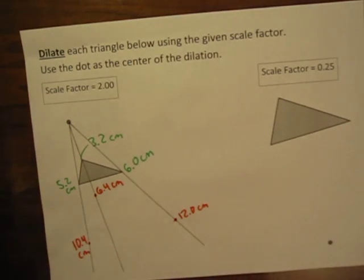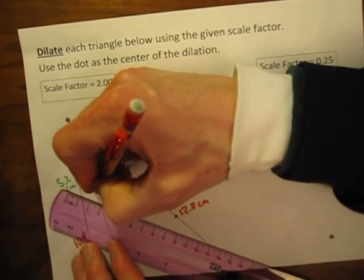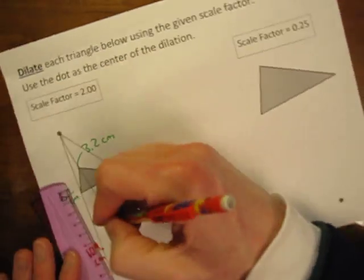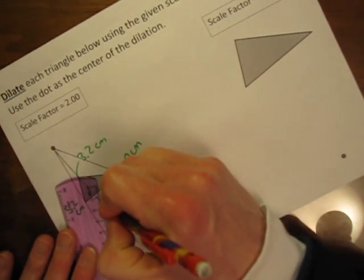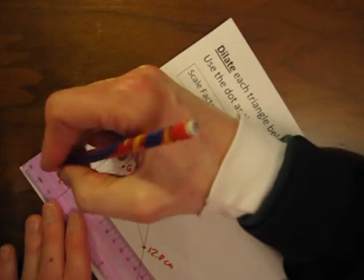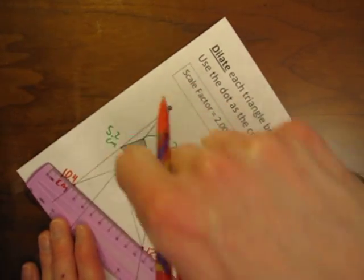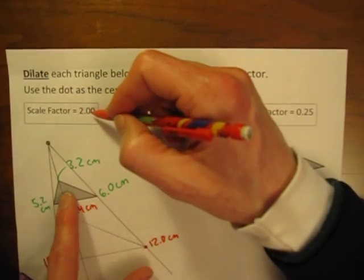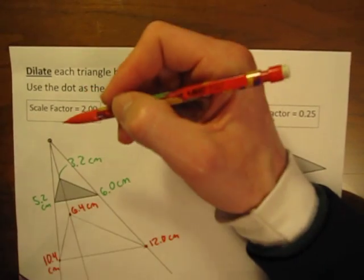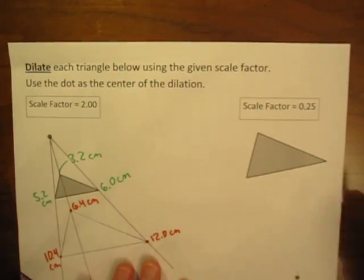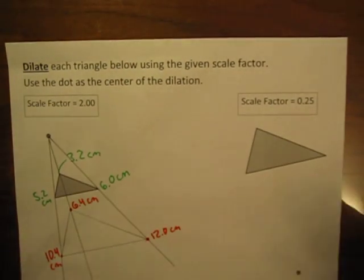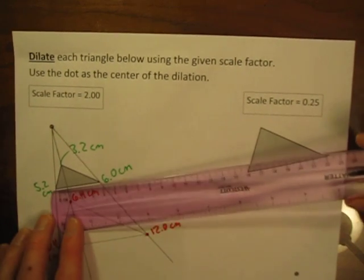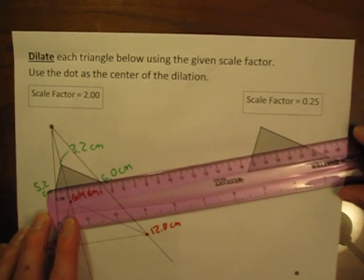The last thing to do is simply connect them with lines, and we've got our new triangle dilated with a scale factor of 2. All of the distances in the new triangle are twice the distance of the original triangle from this center of the dilation. Another interesting thing is on these dilations, not only are the distances twice, but the lengths of the sides are going to be twice the length.